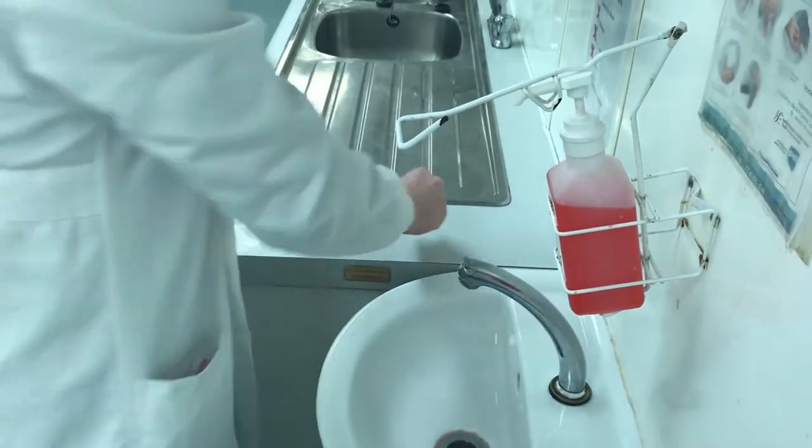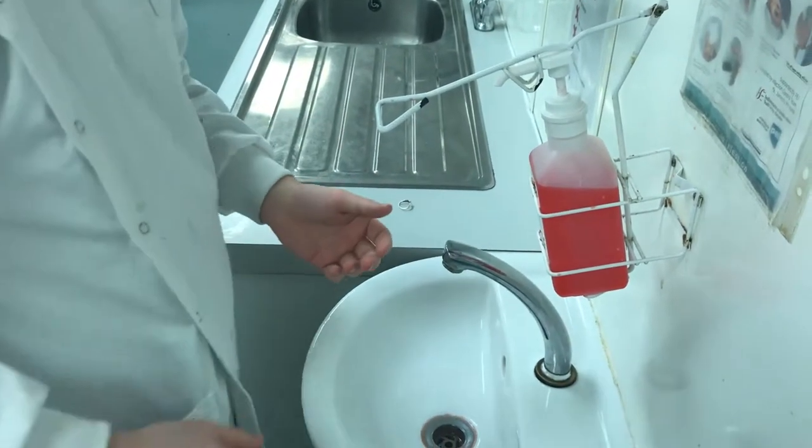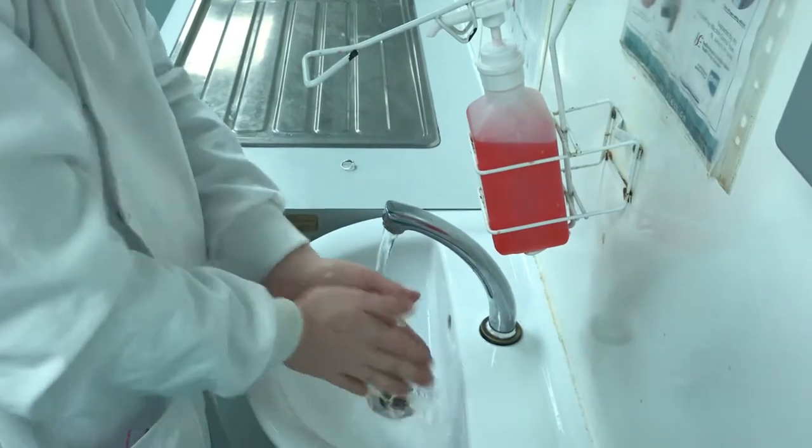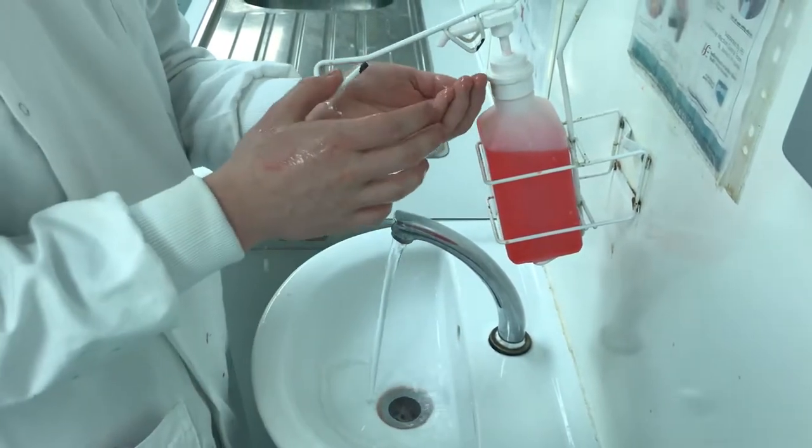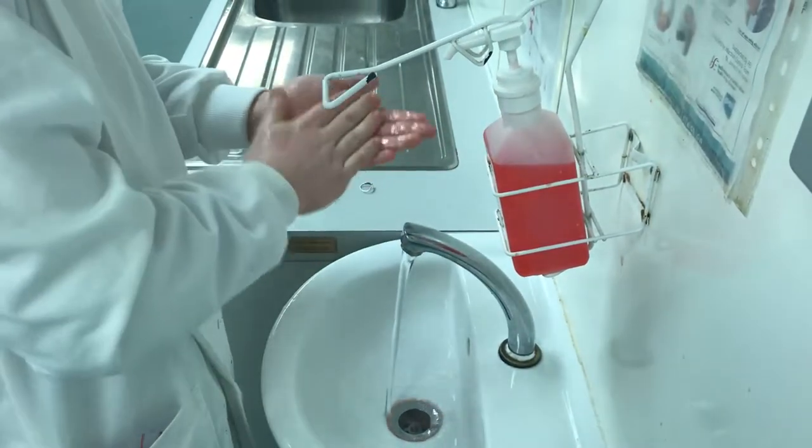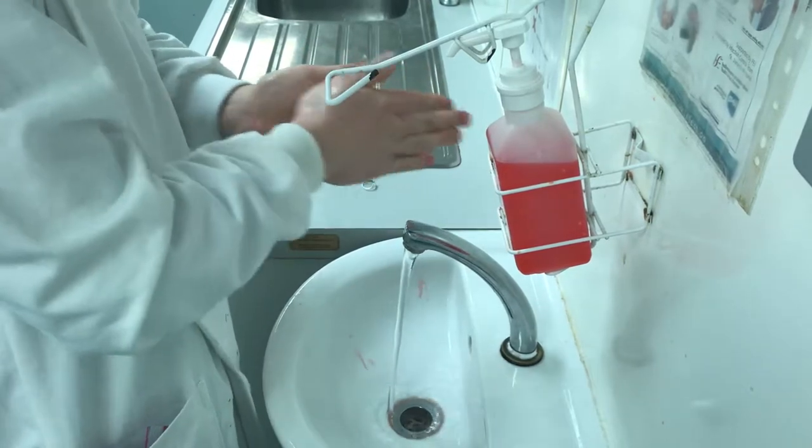Remove all hand and wrist jewellery and ensure that nails are kept short. Wet hands thoroughly under warm running water. Apply 5ml of antiseptic soap to a cupped hand by pressing on the dispenser with the heel of your hand.